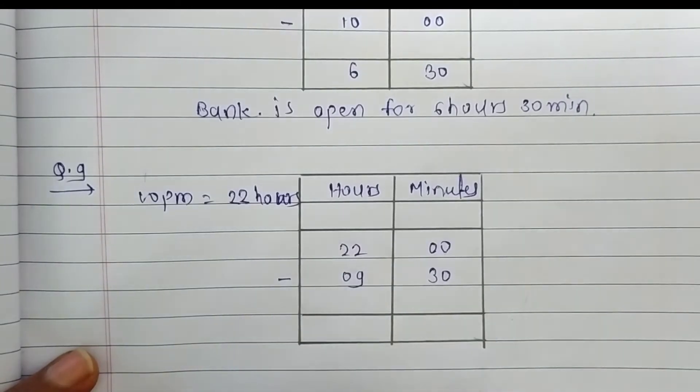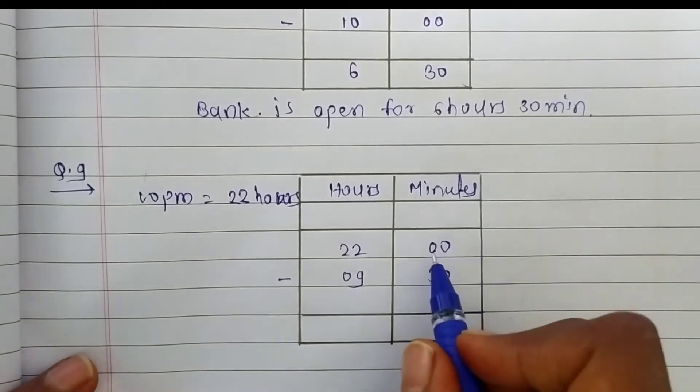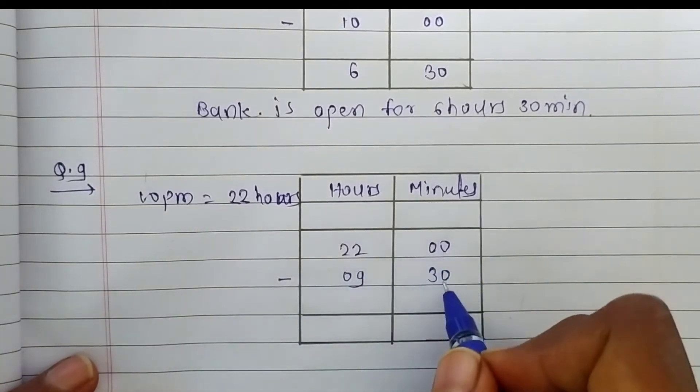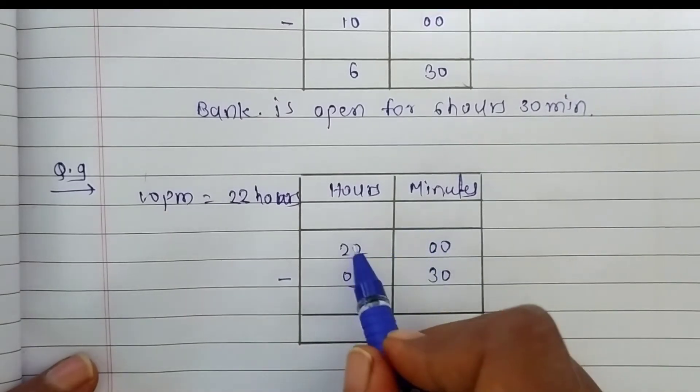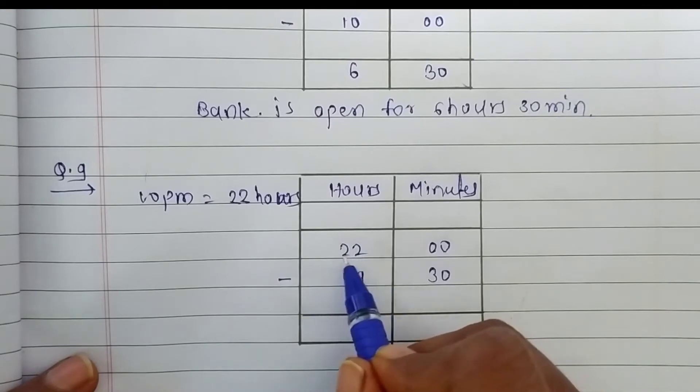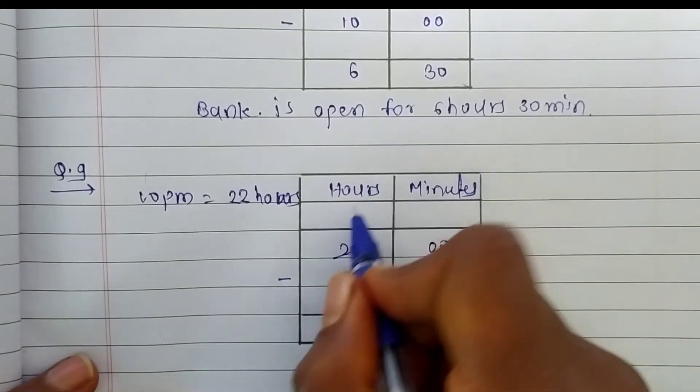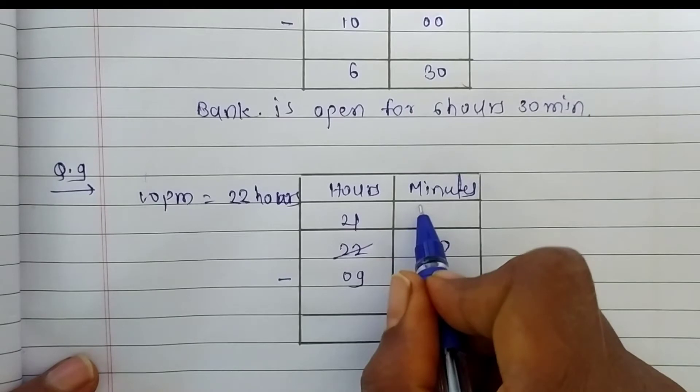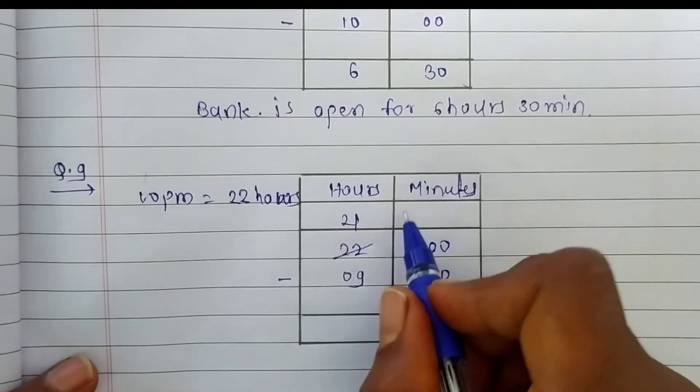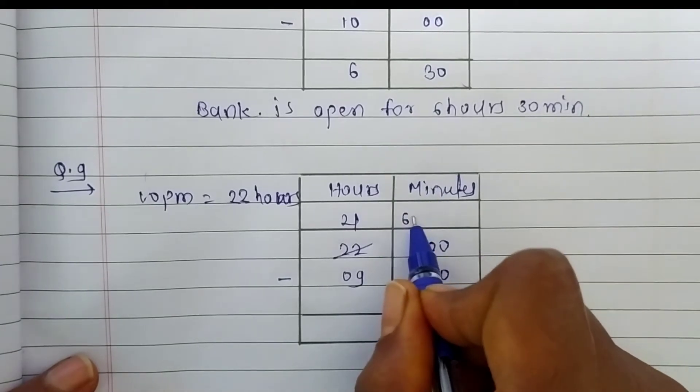9:30 AM should be written as 9:30 in 24 hour clock also. Now, subtract this, we can't subtract here 30 from 0, so we are going to take or borrow 1 from these hours. So here, the hours become 21 now and 1 hour should be converted into 60 minutes.